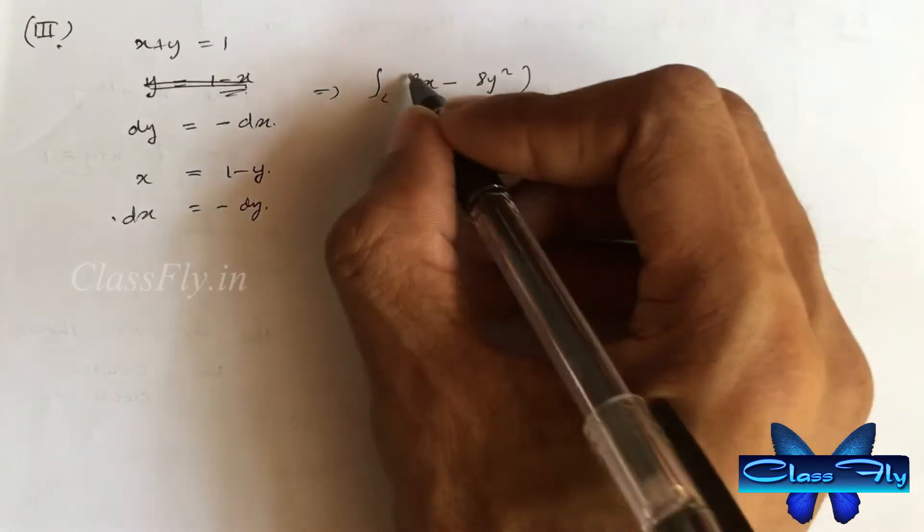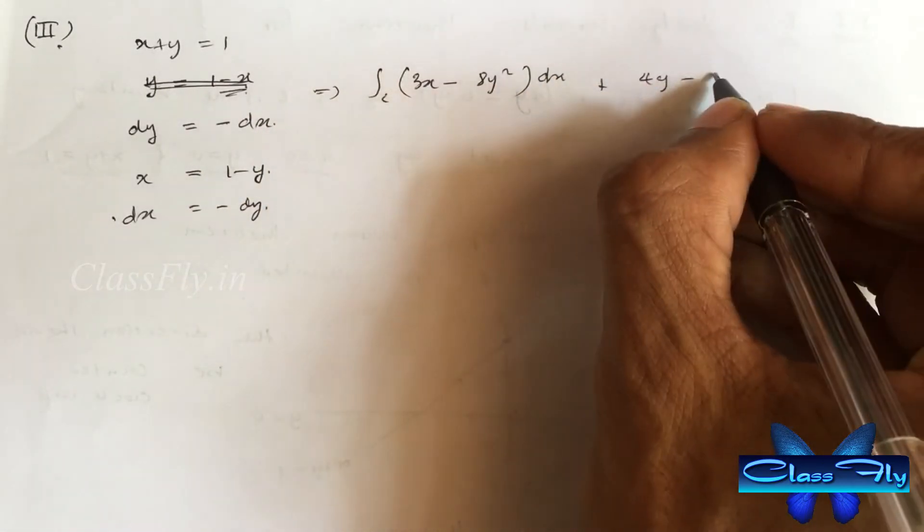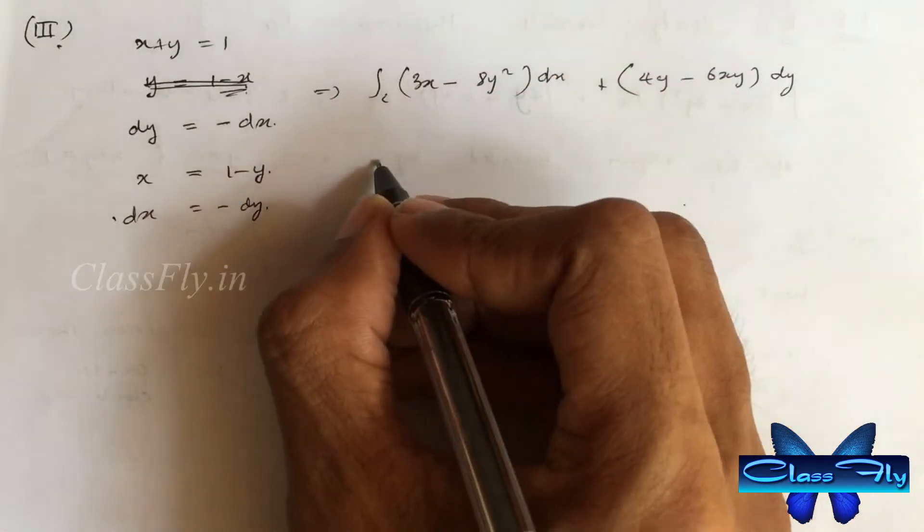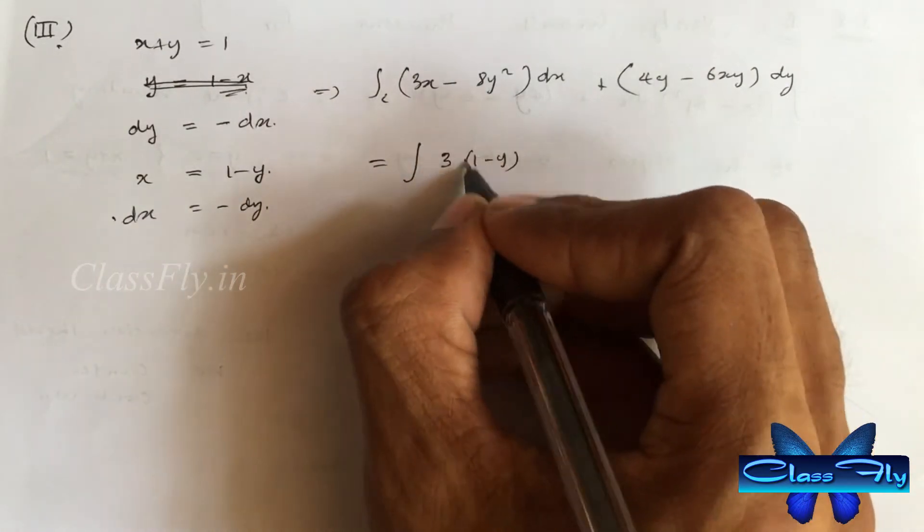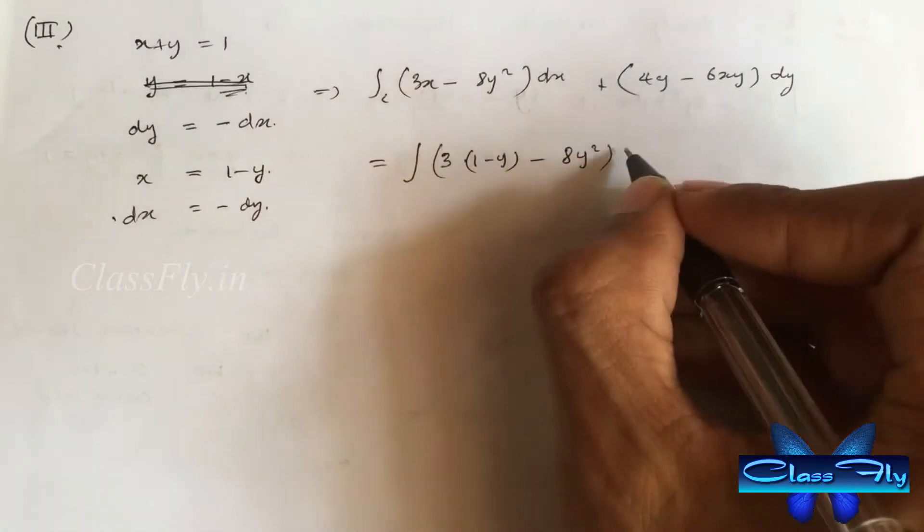Integral c 3x minus 8y square dx plus 4y minus 6xy dy is equal to 3 into 1 minus y minus 8y square into minus dy plus 4y minus 6 into 1 minus y into y dy.